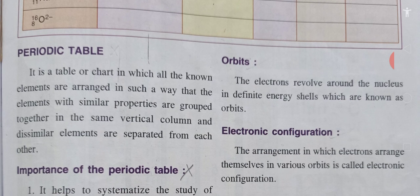The next topic is the periodic table. We have many elements — about 115 known elements — and more are still being discovered, occurring naturally or being made by man. We have classified these elements and arranged them in a table in the form of rows and columns, which we call the periodic table. It is a chart in which all known elements are arranged so that elements with similar properties are grouped together in the same vertical column, and dissimilar elements are separated from each other.